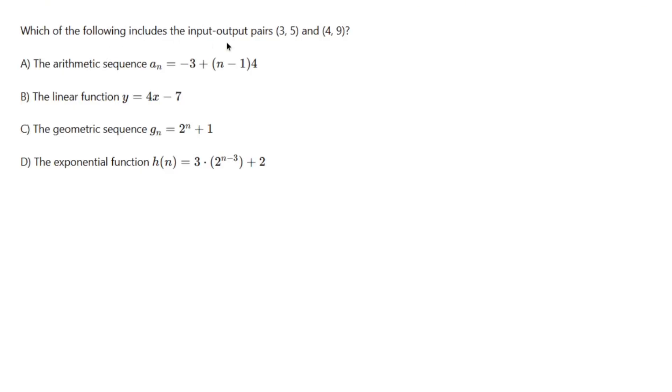Which of the following includes the input-output pairs (3, 5) and (4, 9)? Let's test out C. We're gonna plug these points in and see what we get. So you would be my output, basically my y, and you would be my input, basically my x.